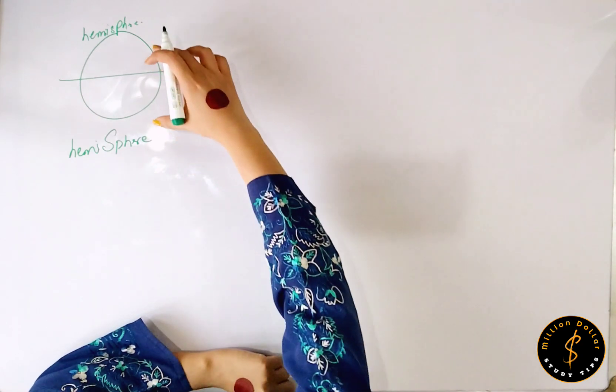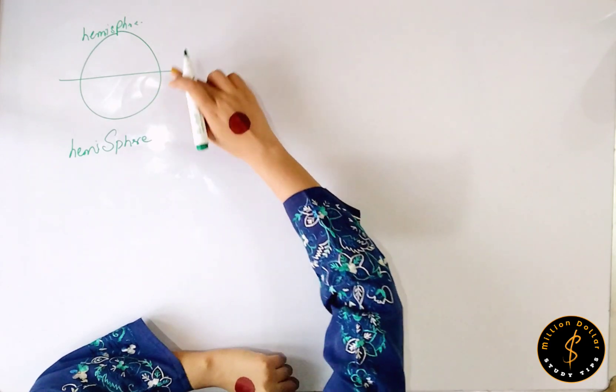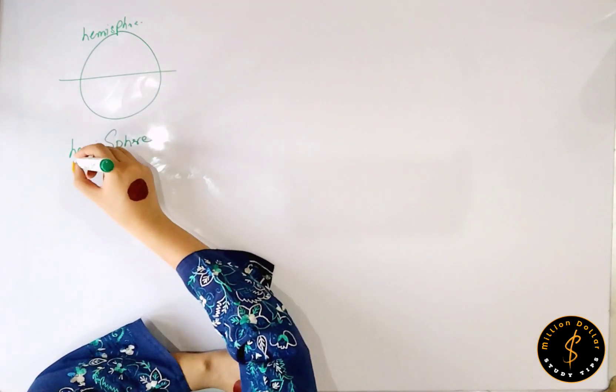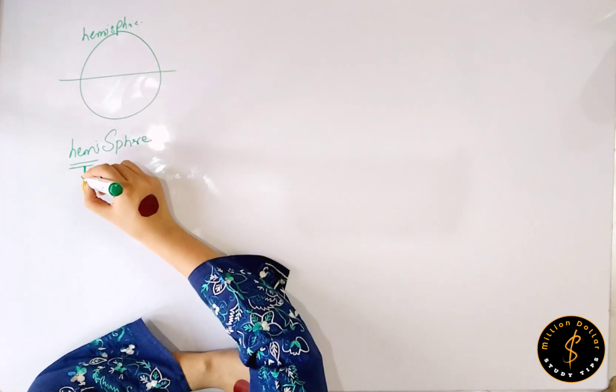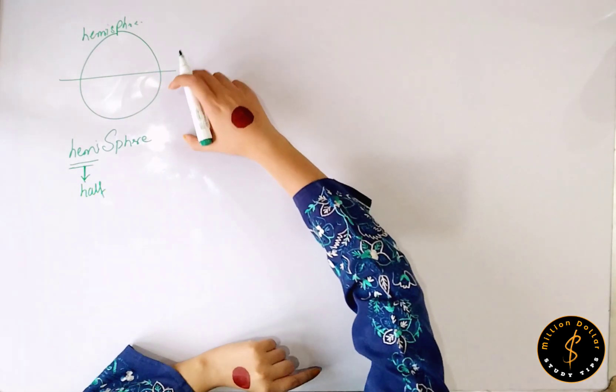If we cut a sphere from the center, it will become two hemispheres. Hemi means half, so it will become two half spheres.